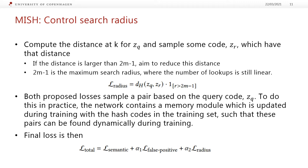Both proposed losses are based on sampling pairs using a query code and finding a pair with some desired property. In practice, the network contains a memory module updated during training with hash codes from the training set, so we can sample these dynamically during training. We end up with a final loss combining a semantic loss, a loss to reduce false positives in the candidate set, and a loss to control the search radius. All models are optimized and chosen purely based on the semantic loss, as we do not wish to sacrifice effectiveness — we simply aim to gain higher efficiency as a side benefit.